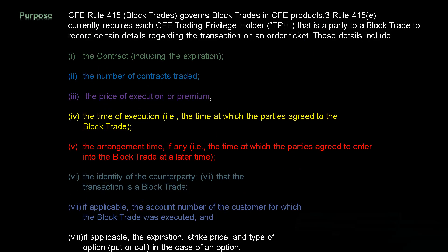The purpose of this one: CFE Rule 415, titled 'Block Trades,' governs block trades in CFE products. Rule 415(e) currently requires that each CFE trading privilege holder, or TPH, that is a party to a block trade record certain details on an order ticket. Those details include: number one, the contract including the expiration; number two, the number of contracts traded; number three, the price of execution or premium; number four, the time of execution; number five, the arrangement time if any; number six, the identity of the counterparty.